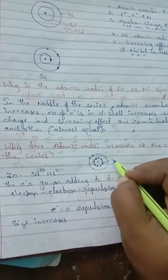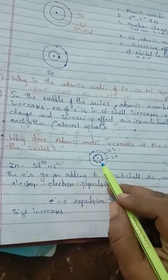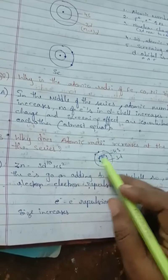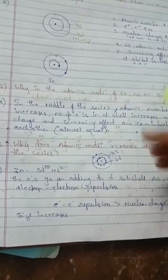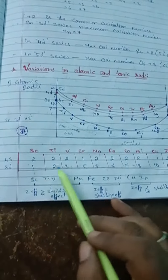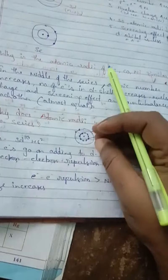In the 3D subshell, 10 electrons are present, while in the outer shell only 2 electrons are present. The electrons keep being added to the 3D subshell only. When the number of electrons in 3D keeps increasing, what happens?